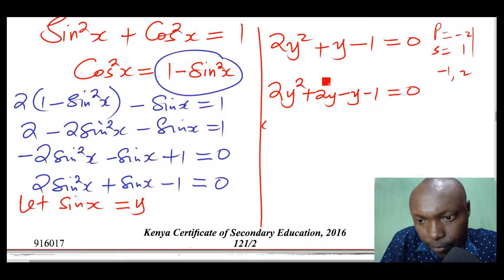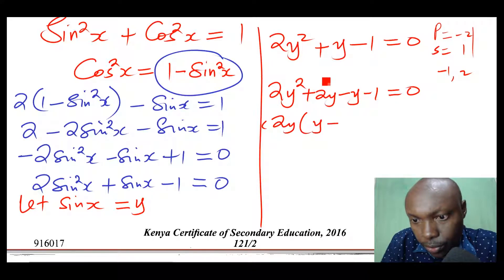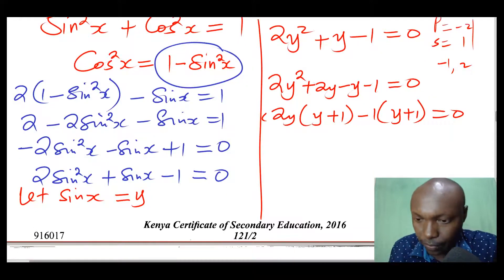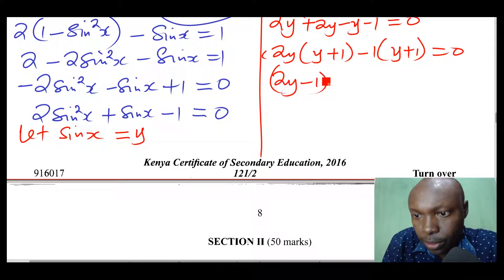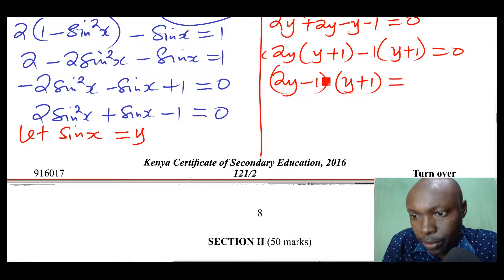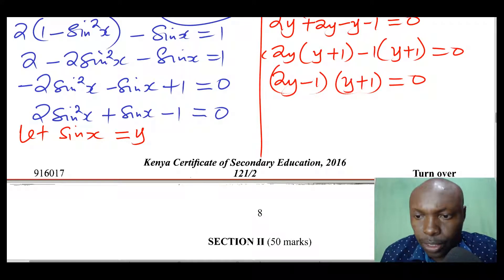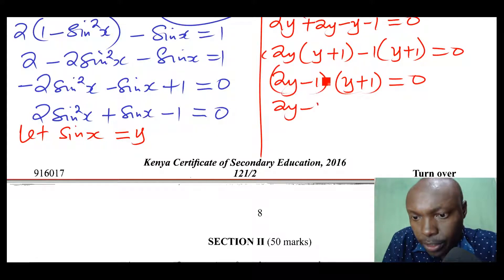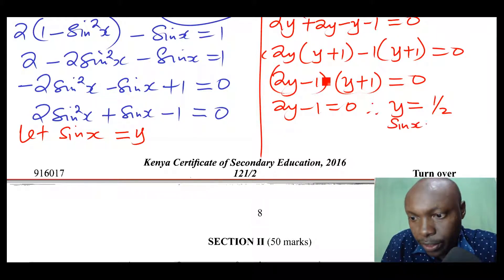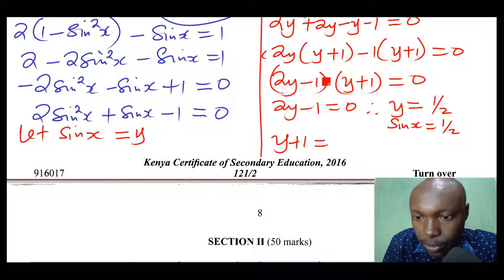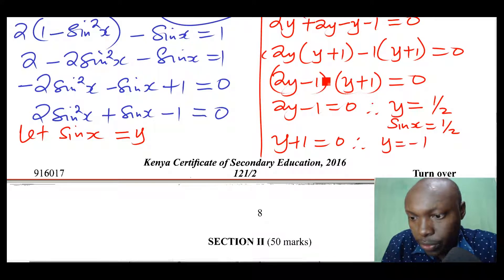Factoring: 2y is common in the first two terms giving 2y(y + 1), and negative 1 is common in the last two terms giving negative 1(y + 1). So the factored form is (2y minus 1)(y plus 1) equals 0. This gives two solutions: 2y minus 1 equals 0, so y equals 1/2, meaning sin x equals 1/2; and y plus 1 equals 0, so y equals negative 1, meaning sin x equals negative 1.